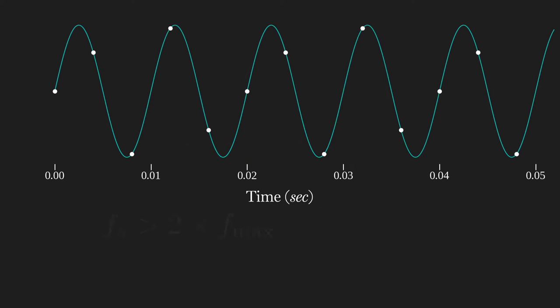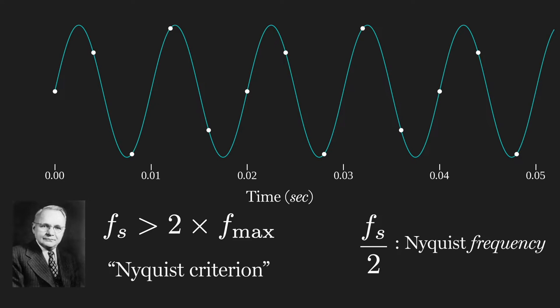In our last video, we specified the Nyquist criterion, which ensures we capture the full content of a signal by sampling at a rate more than twice the highest frequency present in the signal.